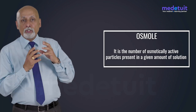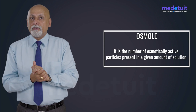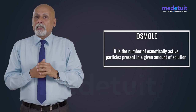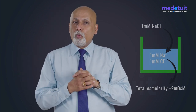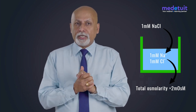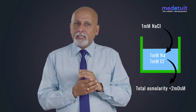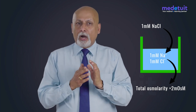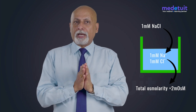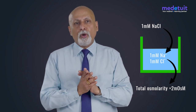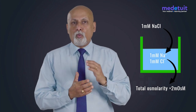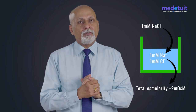One more definition related to osmosis is the osmole. An osmole is the number of osmotically active particles present in a given amount of solution. To differentiate osmole from mole: one mole of sodium chloride (NaCl), after complete dissolution, dissociates into two osmoles — because each molecule dissociates into one sodium ion and one chloride ion. So one mole of NaCl is equivalent to two osmoles.